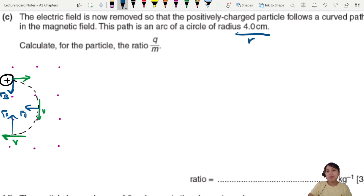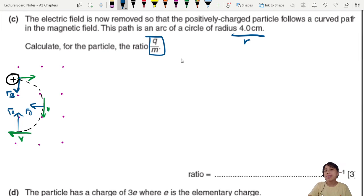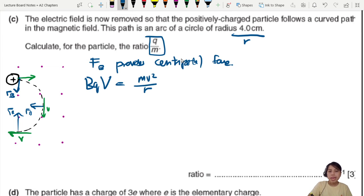The path has become circular, it's not a straight line anymore. No electric field, just good old circular motion. We want to find, they give us radius. Calculate for the particle the ratio of Q over M. How on earth do you get this Q over M? Let's stay calm and do our circular motion. You gotta say the magnetic force provides the centripetal force. Then this centripetal force is what allows the particle to move in a circular curve.